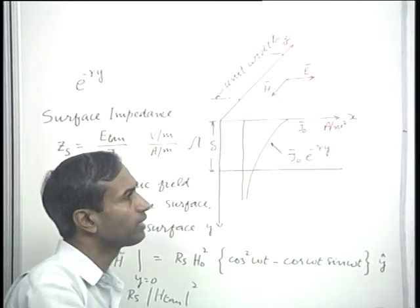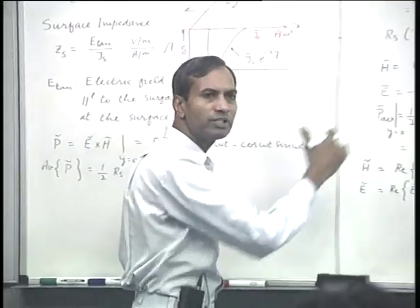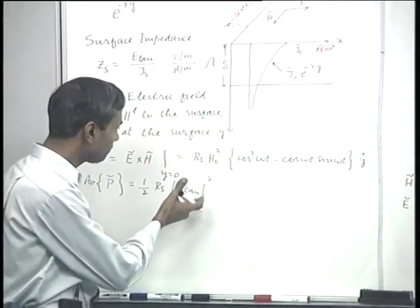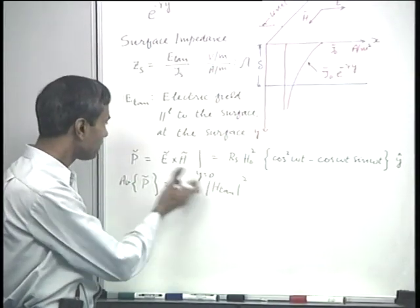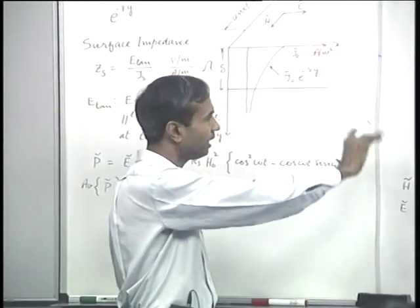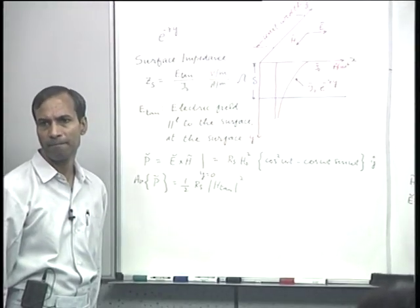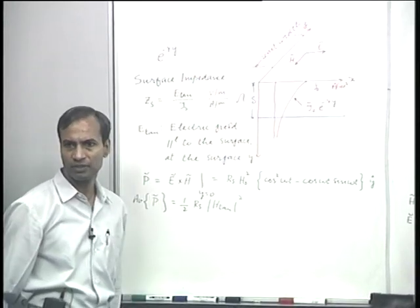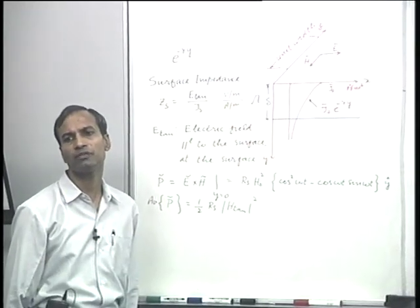Using the engineering approximation, one finds the field vectors for a structure assuming a perfect conductor, determines the tangential magnetic field, and then for the real conducting medium computes the power loss per unit area. This concept of surface impedance and surface resistance therefore helps in calculating the power loss in a conducting medium without considering in detail what is happening along the depth. Just by using the surface impedance, we can work at the surface and correctly calculate the various quantities associated with the conducting medium.